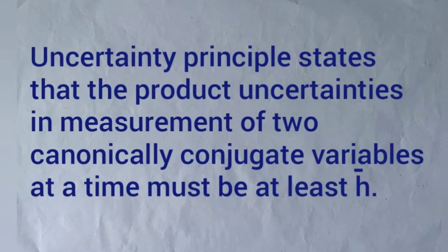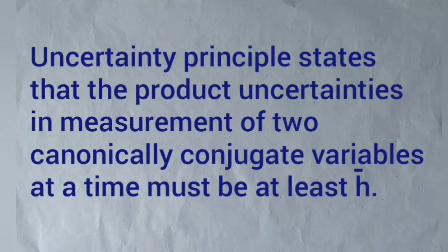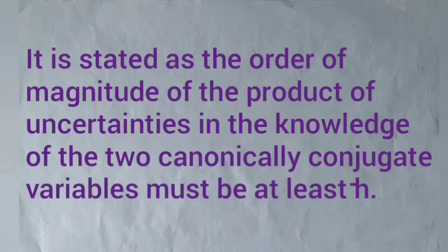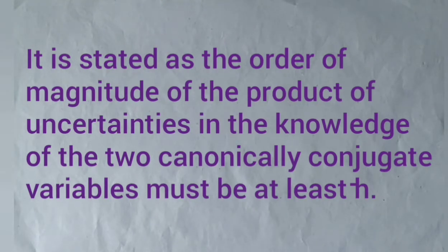More quantitatively, the uncertainty principle states that the product of uncertainties in measurement of two canonically conjugate variables at a time must be of the order of at least h-bar. Alternatively, it is stated as the order of magnitude of the product of uncertainties in the knowledge of two canonically conjugate variables must be at least h-bar.